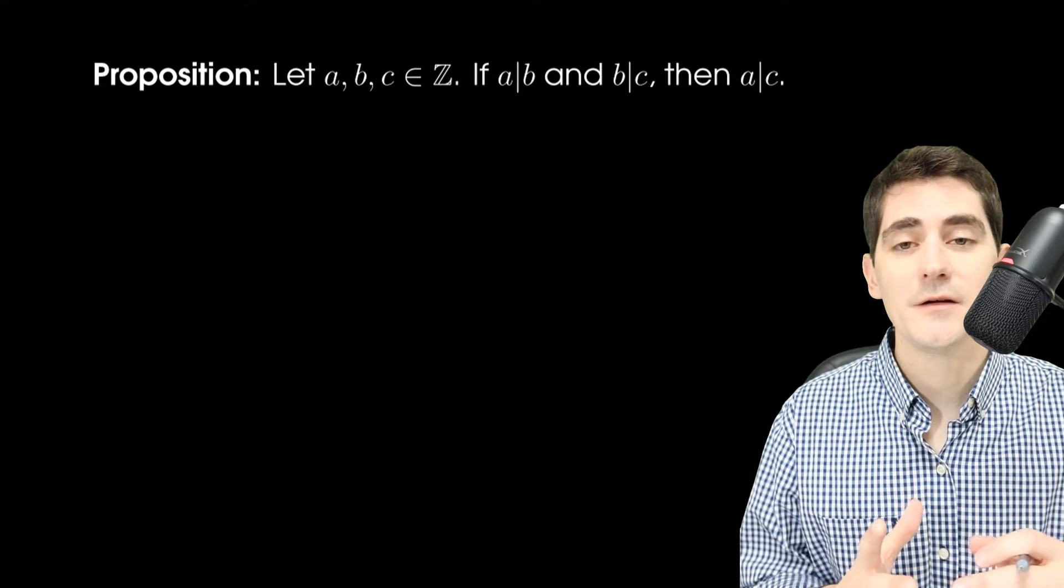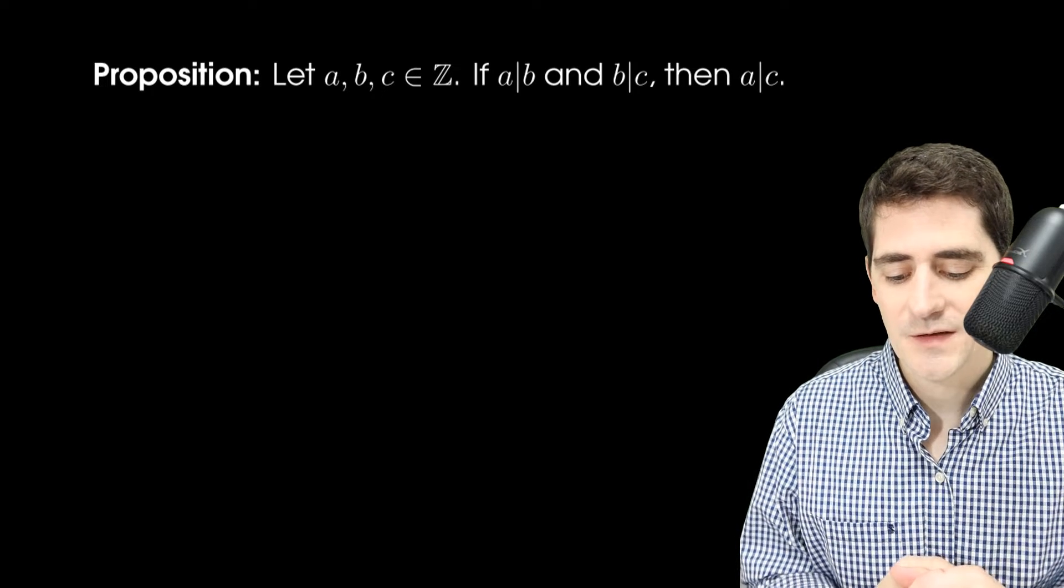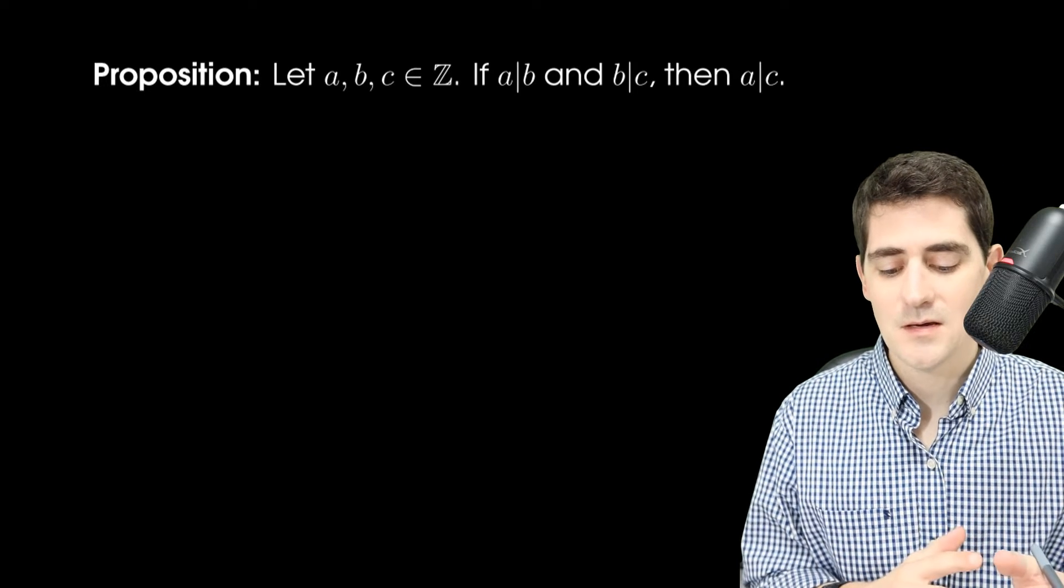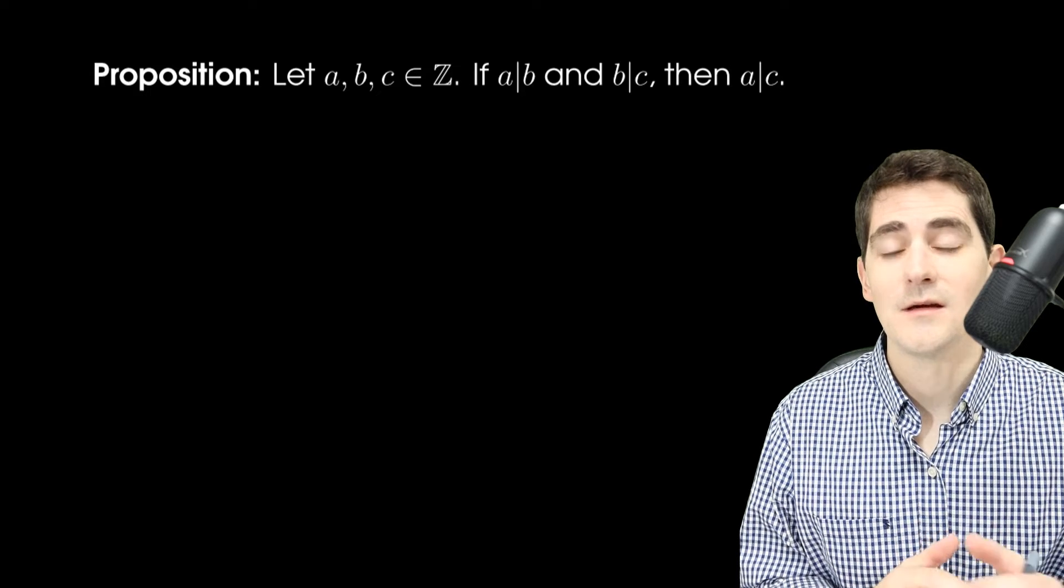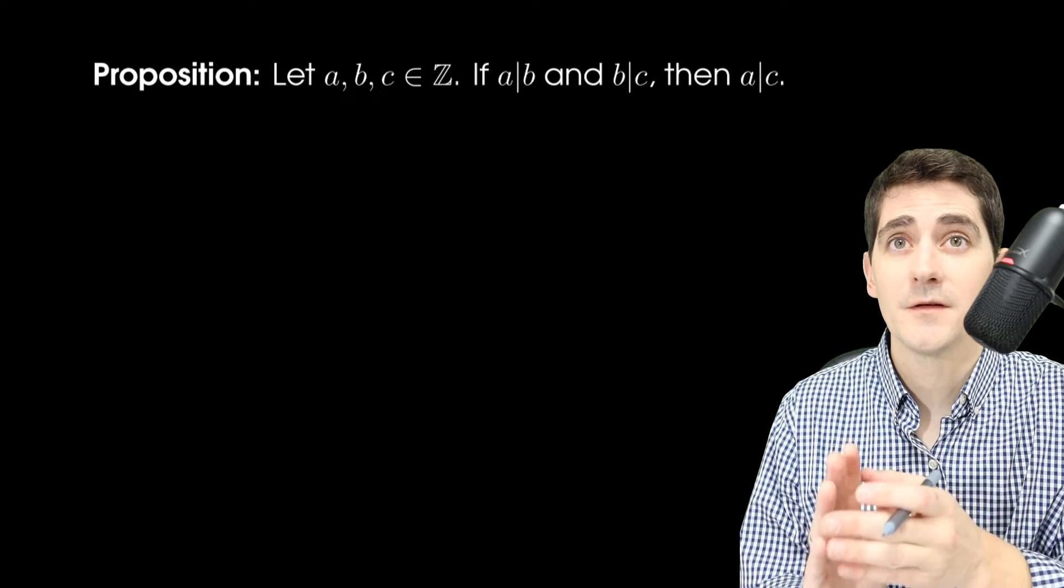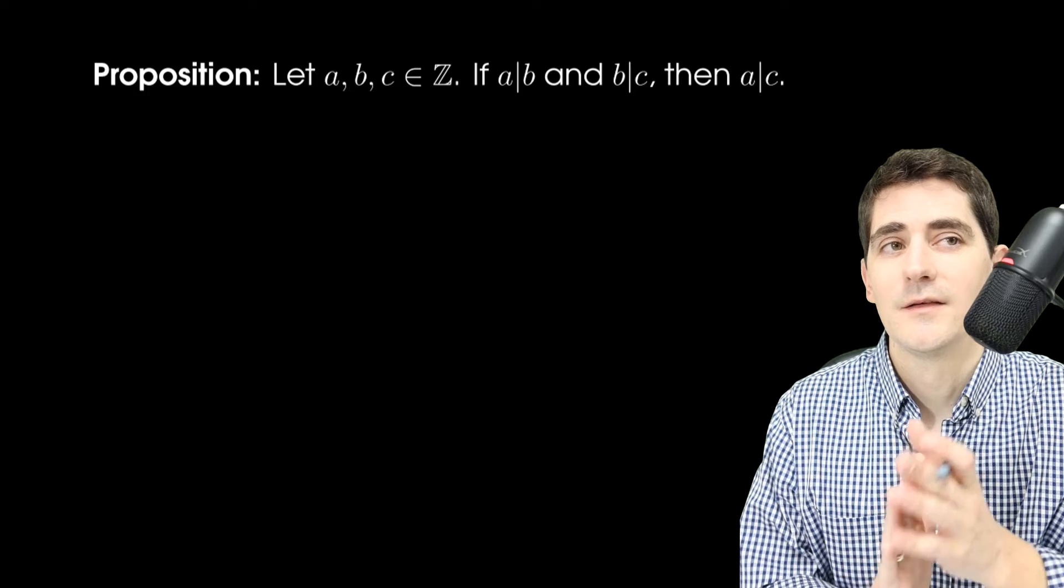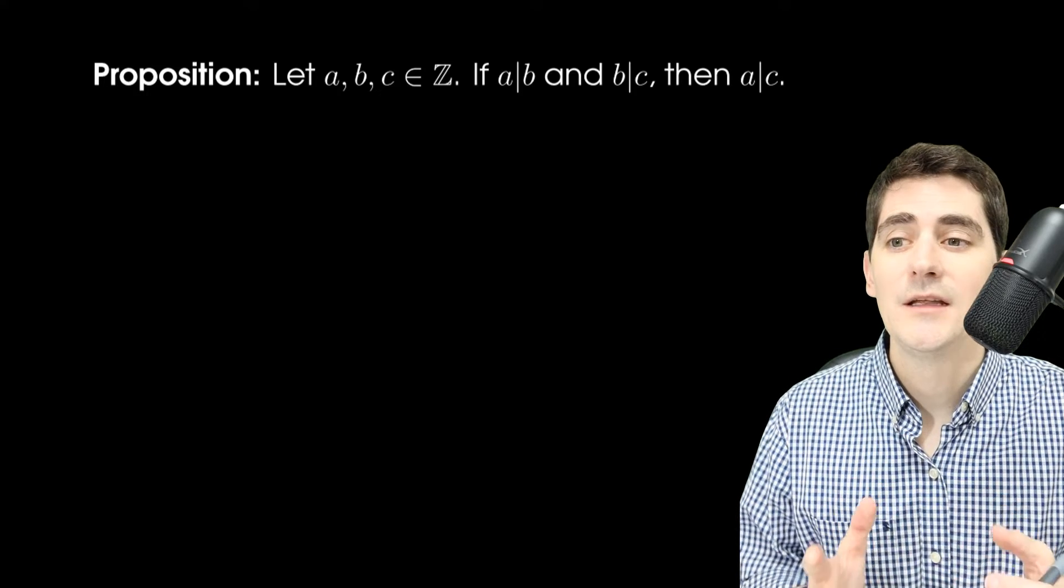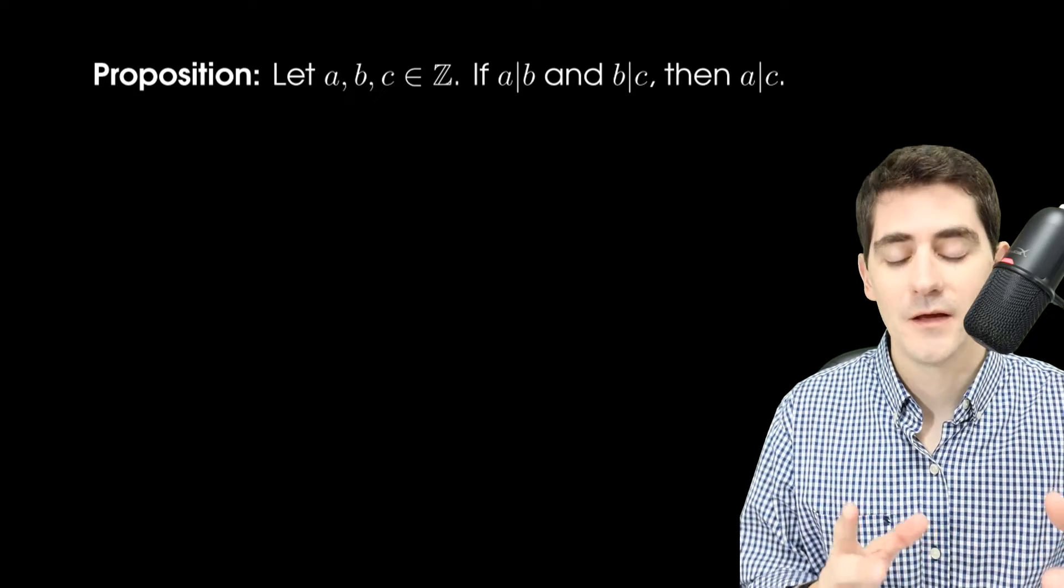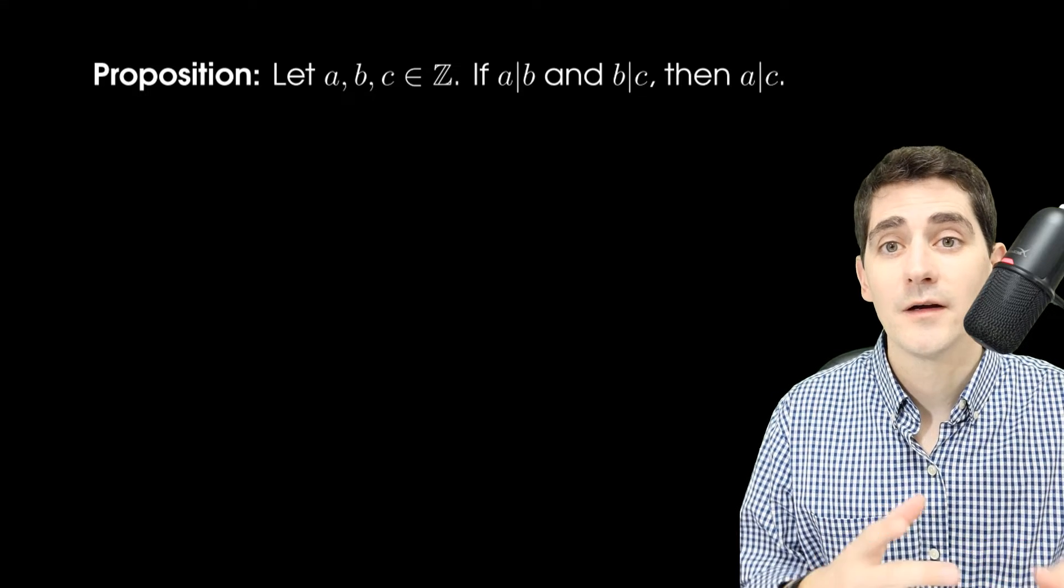All right, so here's my proposition. I have three integers, A, B, and C. And I'm saying if A divides B and B divides C, okay, so that means A divides the first integer divides the second one. The second one divides the third one. Does that imply anything about the first and the third? And the answer is yes, A divides C.